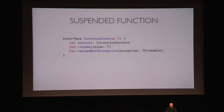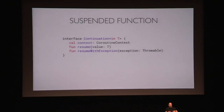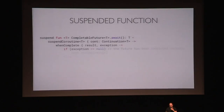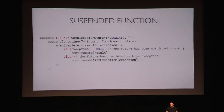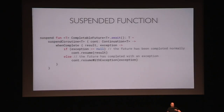Back to the continuation interface — it has resume and resume with exception. When the coroutine gets suspended, this interface is implemented on that coroutine built by the coroutine builder. It takes the state, saves it, and when it gets resumed, calls one of these methods. The built-in await function basically checks if there was an exception thrown in the background and passes it into resume with exception; otherwise it passes the value.